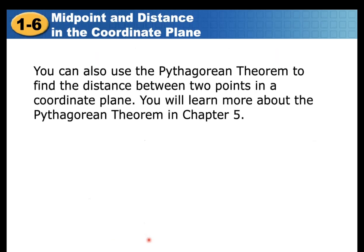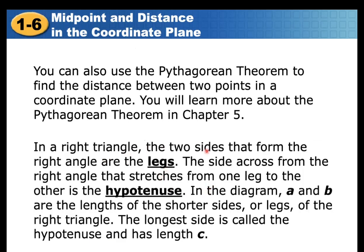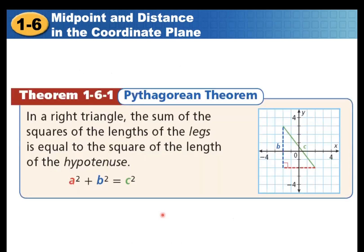You can also use the Pythagorean theorem to find the distance between two points in the coordinate plane. The two sides that form the right angle are the legs, and the side across from the right angle is the hypotenuse. A and B are the lengths of the legs, C is the hypotenuse, and the formula is A² + B² = C².